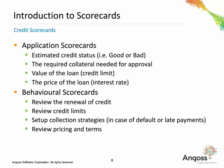The main difference between application scorecards and behavior scorecards is the availability of the data. At the time of application, we have a limited amount of data because the data I can use in scoring new customers are only the data I collect at the time of application. In the case of behavior scorecards, I have additional data coming from the behavior of these customers and their transactions, their purchases, their payment types, their payment schedules, and so on.